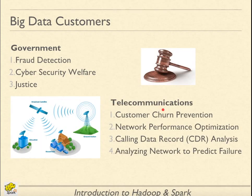Telecom companies can use Big Data to understand why their customers are leaving and how they can prevent that — this is known as Customer Churn Prevention. The data that helps includes how many calls customers made to the call center, how long they were out of coverage area, and what their usage pattern was.